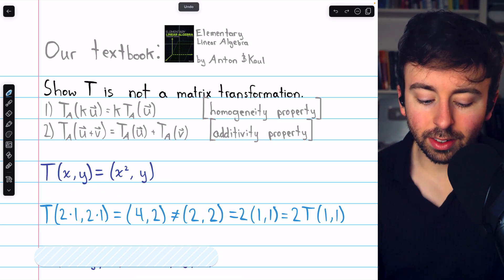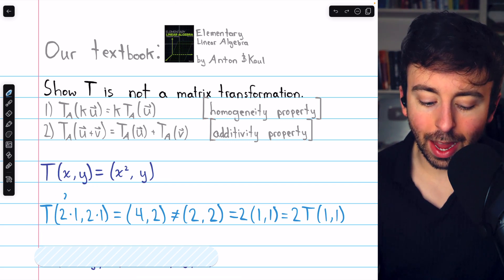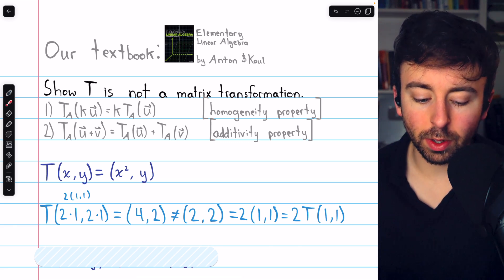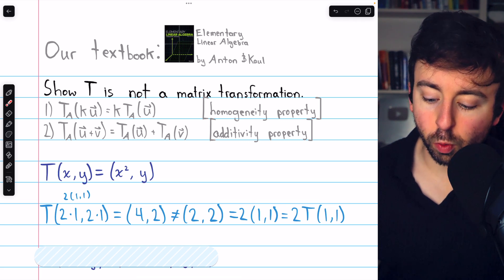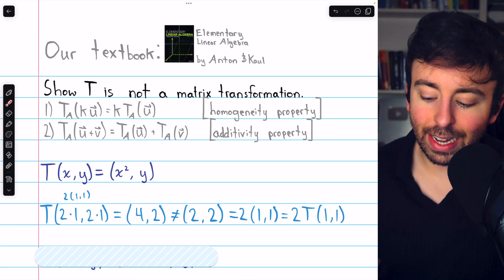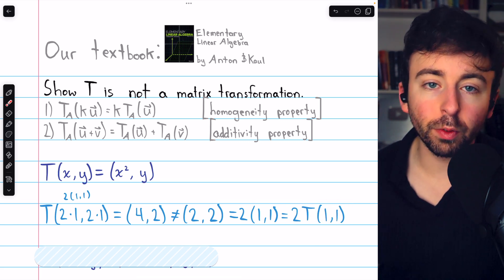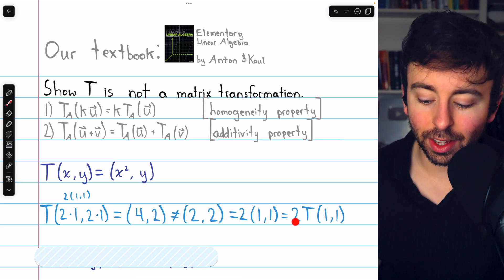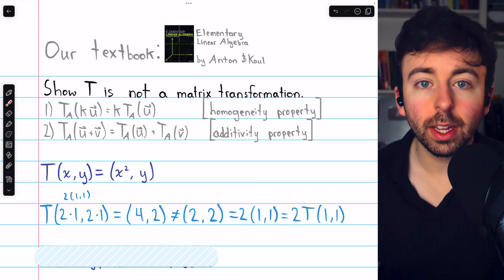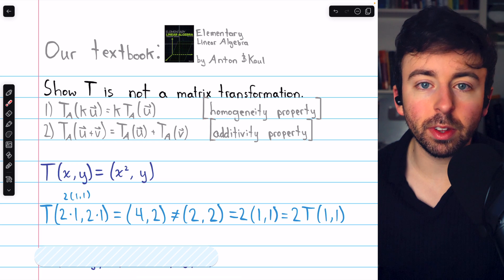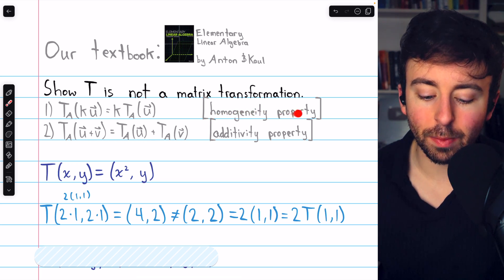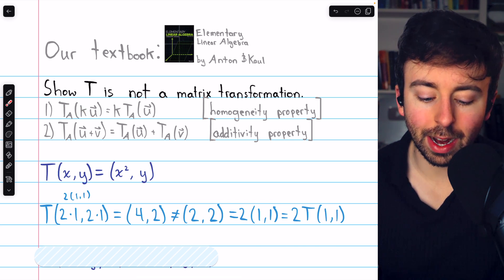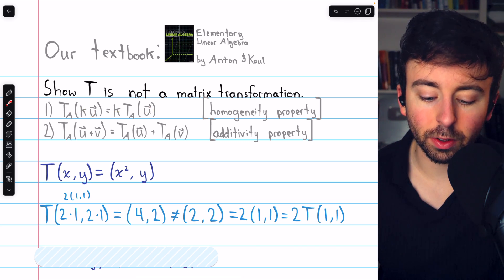On the left side of this line, you'll see that we transform a scaled vector, 2 times the vector (1,1). You can see that we're plugging 2 times 1, 2 times 1 into the transformation. On the right side of this line, we take the vector (1,1) and transform it and then scale the image by a factor of 2. These two things should be the same if this is a matrix transformation because a matrix transformation has to follow the homogeneity property, that the image of a scaled vector is the scale of the vector's image.